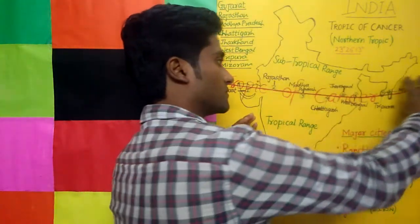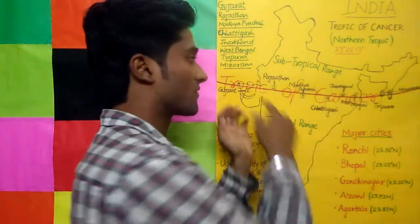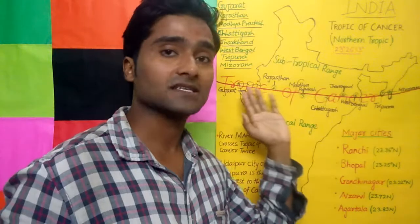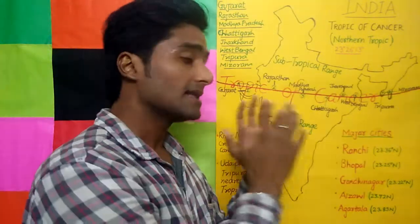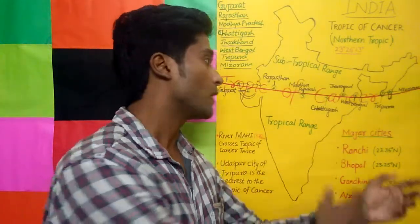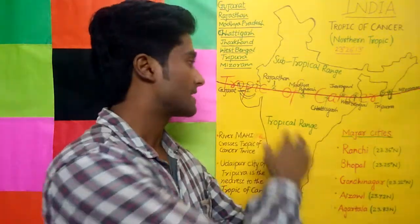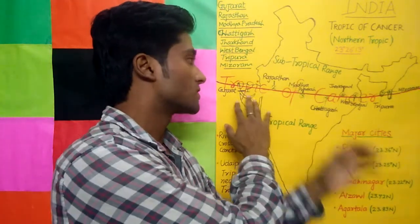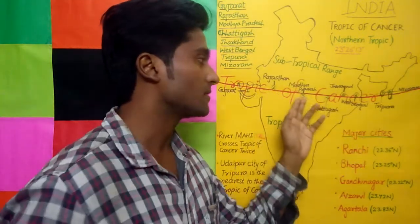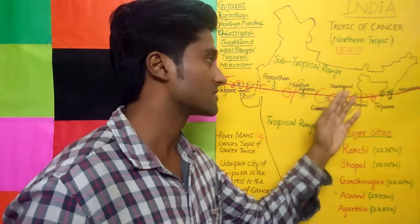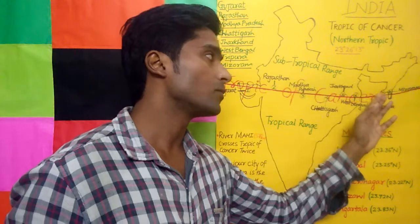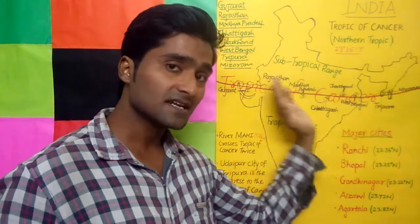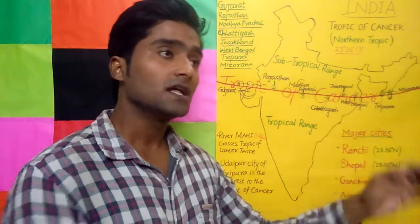Here you can see central India. The red line depicts the Tropic of Cancer, and this Tropic of Cancer passes through eight states of India: Gujarat, Rajasthan, Madhya Pradesh, Chhattisgarh, Jharkhand, West Bengal, Tripura, and Mizoram.